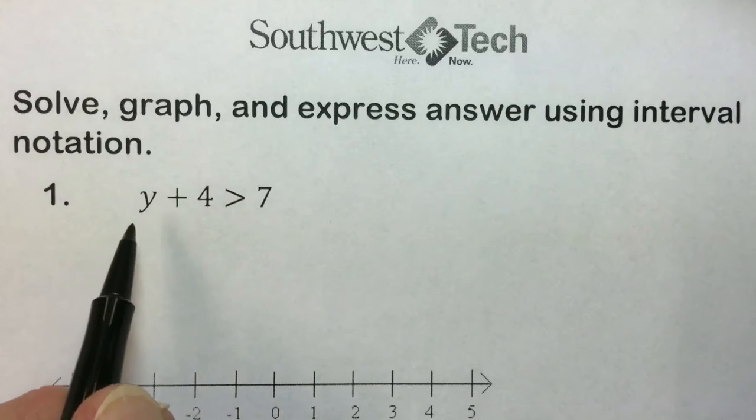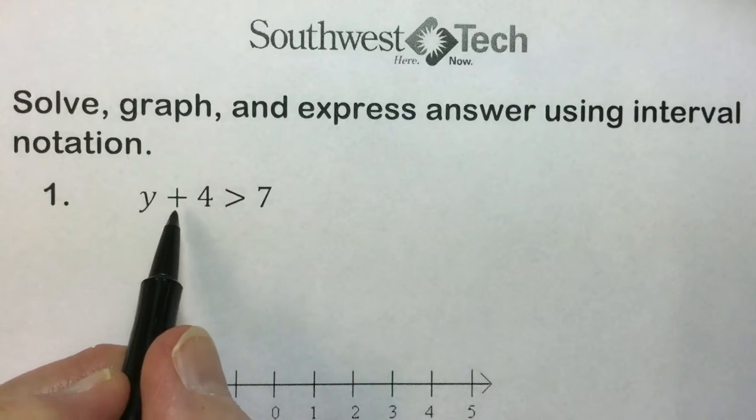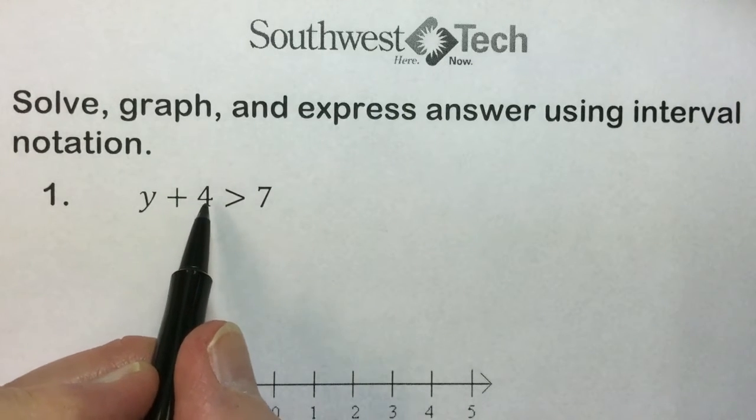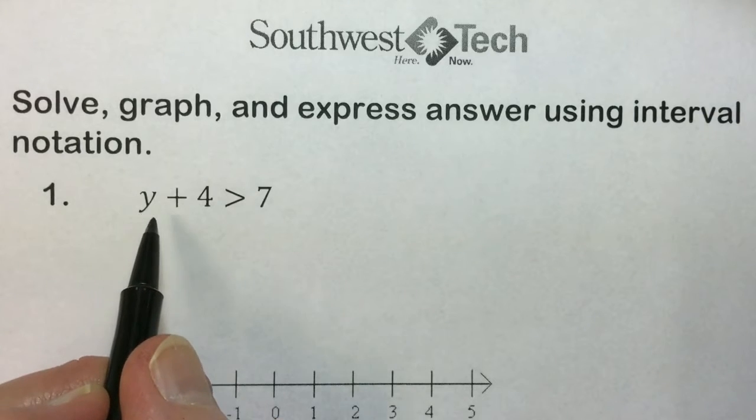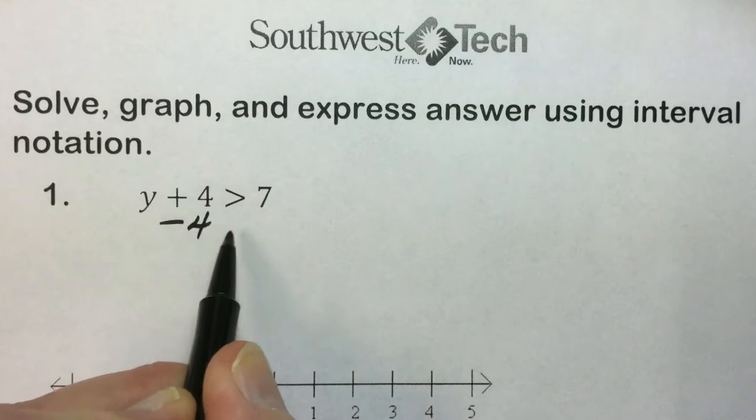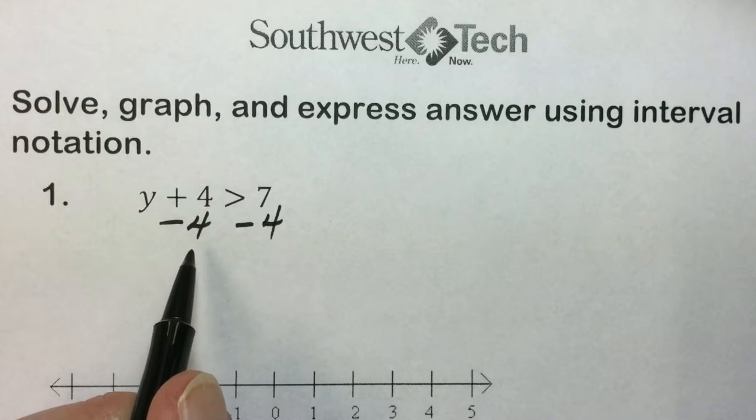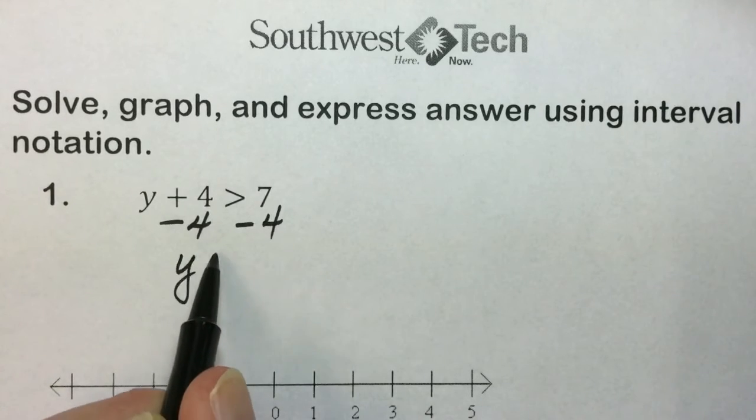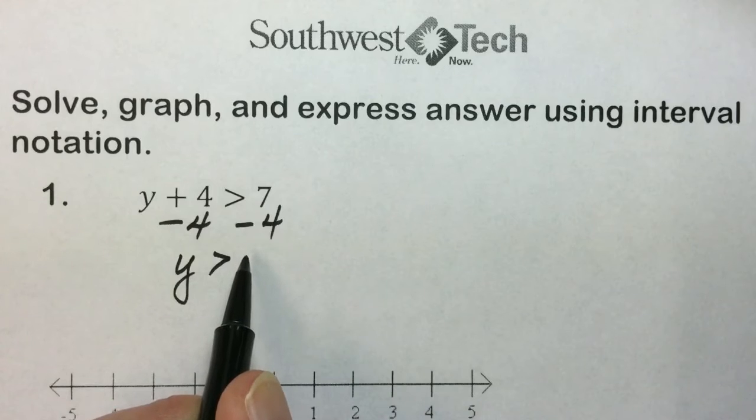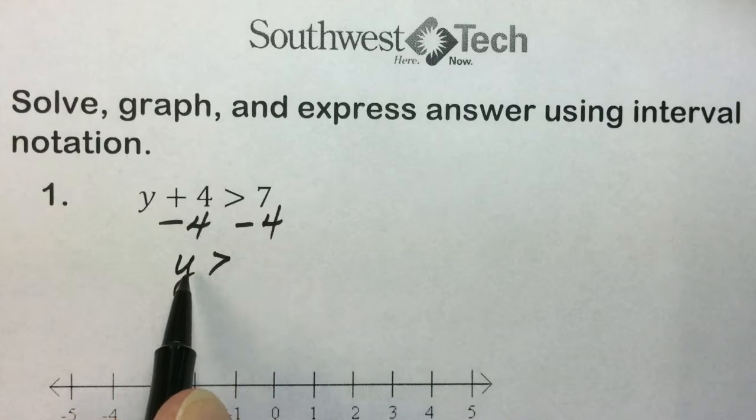Let's see how it works. To solve this inequality, we need to eliminate the plus four to get the variable by itself. So either subtract four or add a negative four to both sides of the inequality. Simplifying leads us to an equivalent inequality statement.